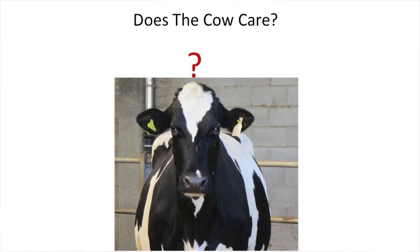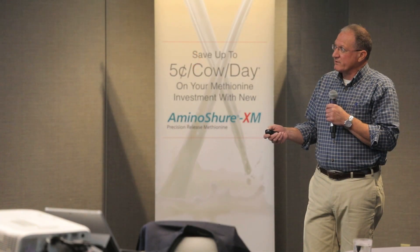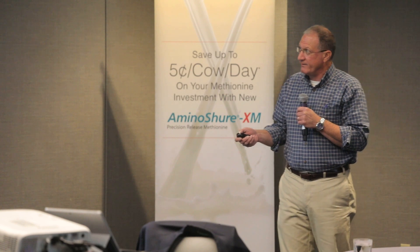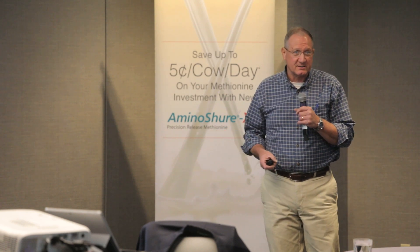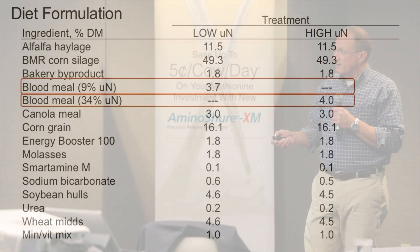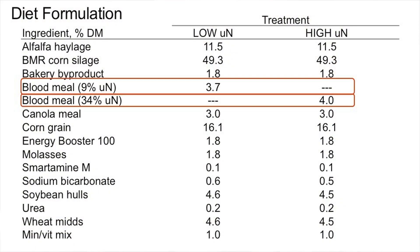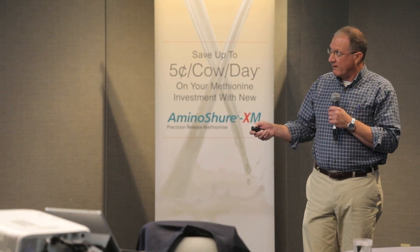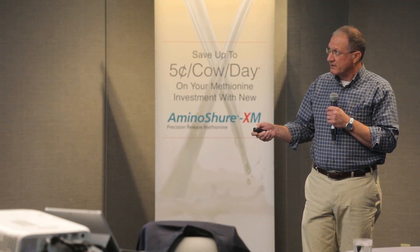The first study we ran used a blood meal that was probably the best on the planet — 9% indigestible, so 91% intestinal digestibility. Then we used the blood meal that Central New York Feeds had on the floor at the time we ran the study — it was 34% indigestible, just what they had. There was a little bit of difference in nitrogen content, so we had to feed a little bit more of it to remain iso-nitrogenous.